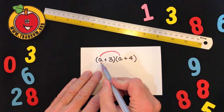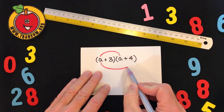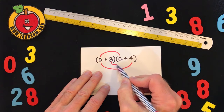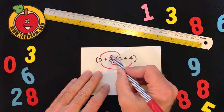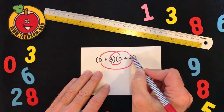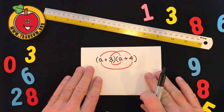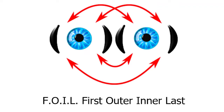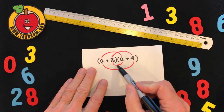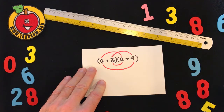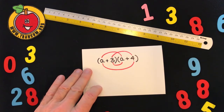There's the first term in both brackets multiplied together, then the first term of the first bracket and the second term of the second bracket. Then the 3 and the A are multiplied, and the 3 and the 4 are multiplied. If you imagine those two brackets as a pair of eyes, it looks like a clown's face — two eyes, a nose, a mouth, a left eyebrow and a right eyebrow. If that helps you remember it, fair enough.